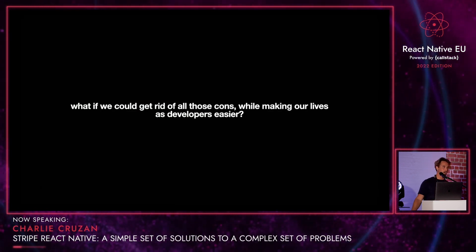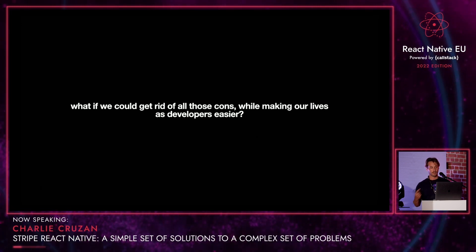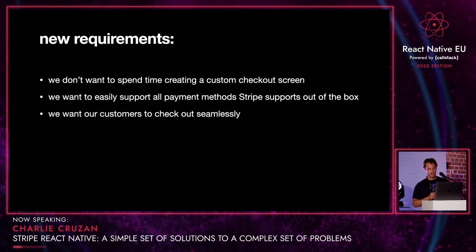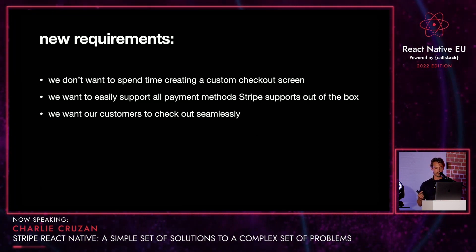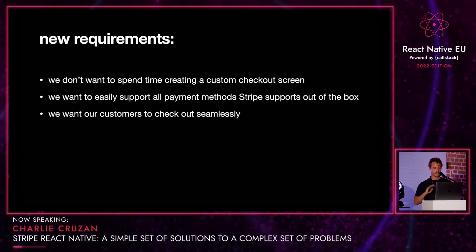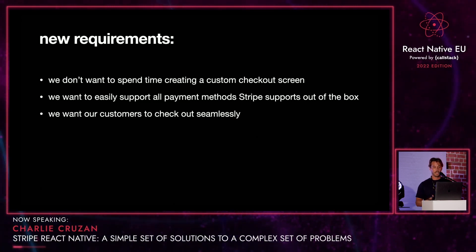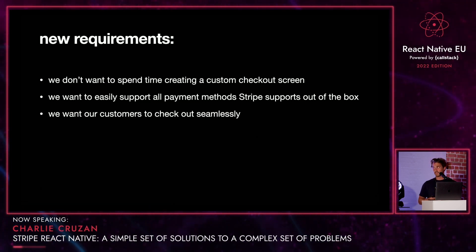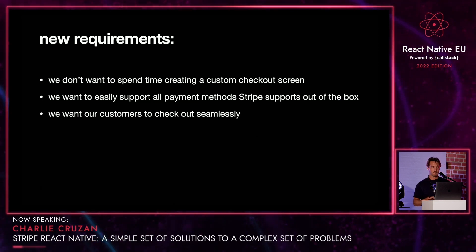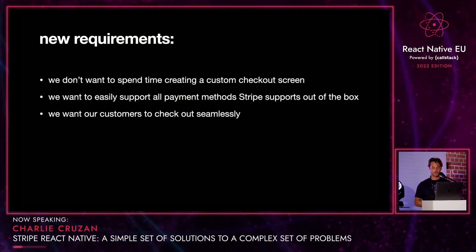What if we could get rid of all these cons, make our users' lives better, and also make our lives as developers easier? Let's say we have a couple new requirements for a V2 of our checkout page. Number one, we don't want to spend time creating a custom checkout screen — we just want a button, and that's it. We also want to easily support every payment method that Stripe supports out of the box. And if Stripe adds some, we want to get those for free without having to update our app. And finally, we want our customers to have a great and seamless checkout experience, meaning we remember their old payment methods.